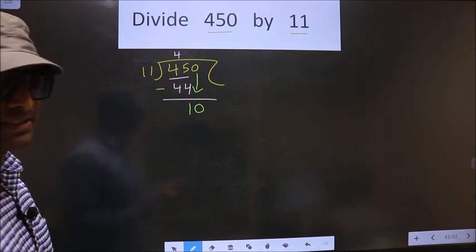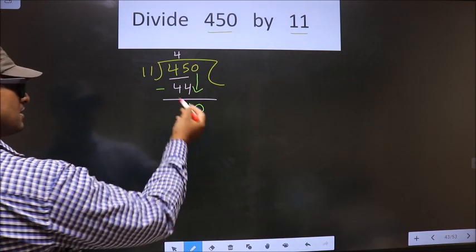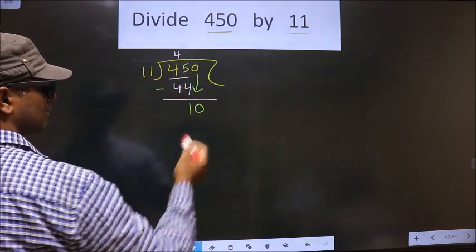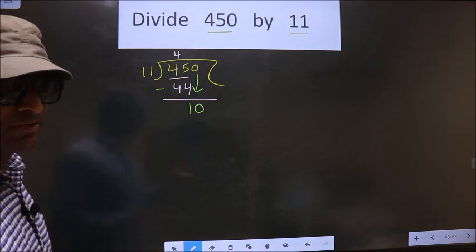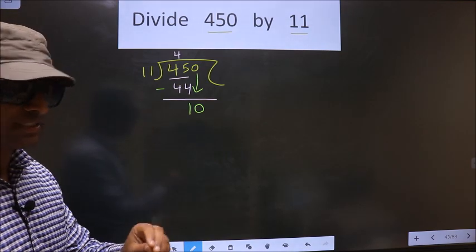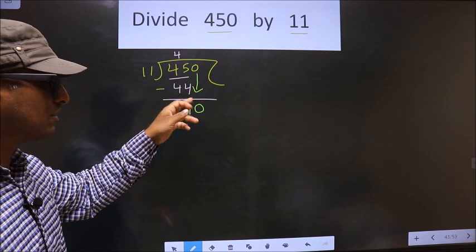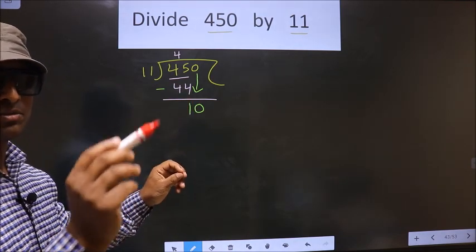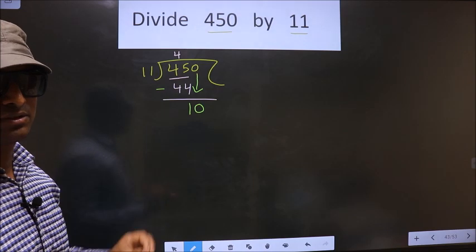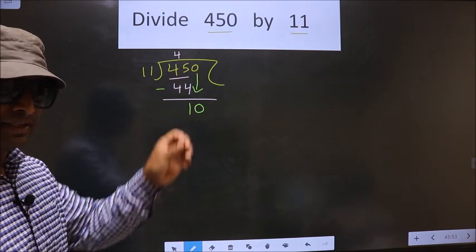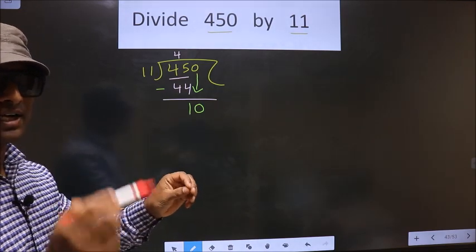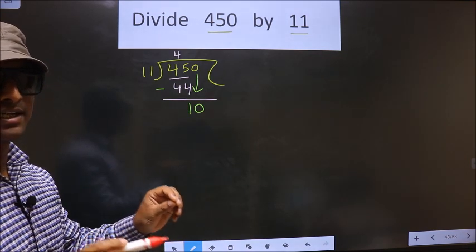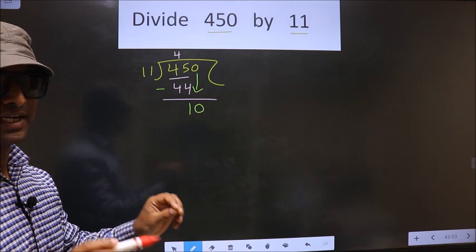What is the mistake? See, 10 is smaller than 11. So what many do is they put a dot and take 0 here, which is wrong. Just now you brought a number down, and in the same step you cannot put a dot and take 0. I repeat: bringing the number down and putting a dot and taking 0, both at a single step, you should not do. It is wrong.